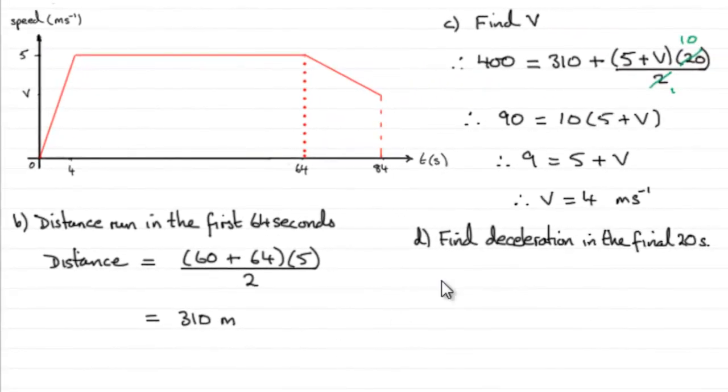Now in part D, we're asked to find the deceleration of the girl in the final 20 seconds, so that's going to be represented by this part of the graph here.